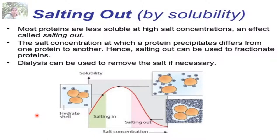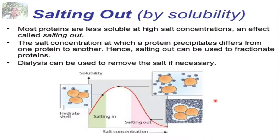What is salting out? Most proteins are less soluble at high salt concentrations — this effect is called salting out. The salt concentration at which a protein precipitates differs from one protein to another. Therefore, salting out can be used to fractionate proteins. After that, dialysis can be applied to remove the salts to get purified protein. The protein molecule has a hydrated shell; increasing salt concentration causes proteins to precipitate out of solution.